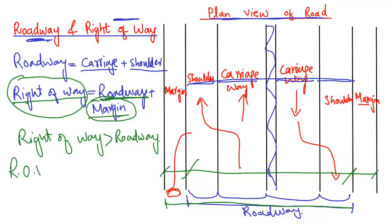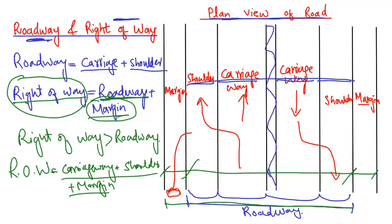Right of way can also be defined as: right of way equals carriageway plus shoulder plus margin, because it consists of three different components of the road structure. So the roadway is a combination of only the carriageway and the shoulder, while the right of way consists of three main parts: carriageway, shoulder, and margin.